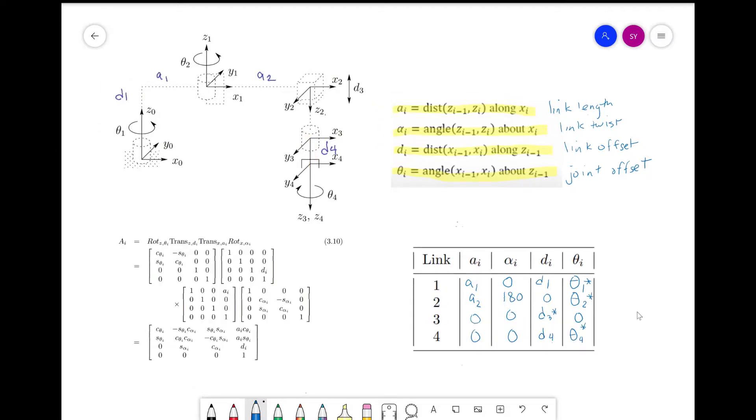Now that we have our DH parameters, we can form each homogeneous transformation matrix, A_i. Each matrix is represented as a product of four basic transformations.